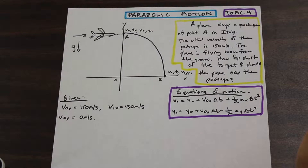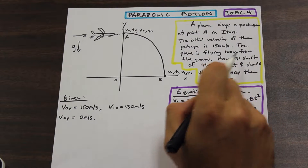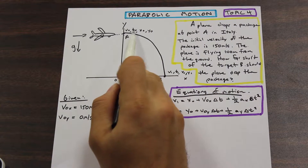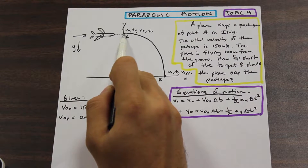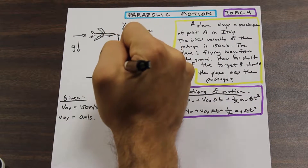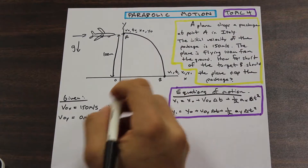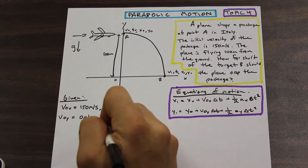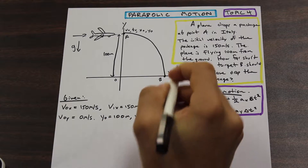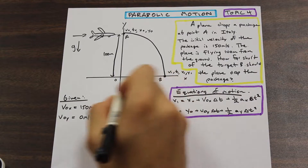It's really important in these questions to read the question carefully — a few times — and see what you can pick out and how the wording applies to the variables you've assigned. We have V-naught, T-naught, X-naught, and Y-naught. The plane is flying 100 meters from the ground, so Y-naught equals 100 meters. And Y1 — when the package is on the ground — equals zero meters, since that's back at our reference origin.